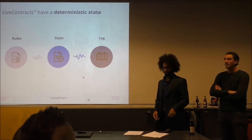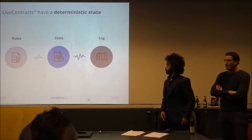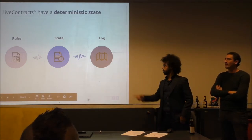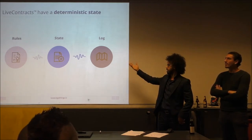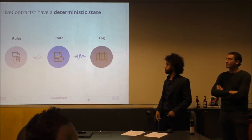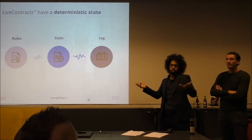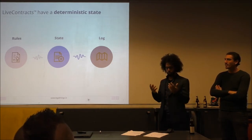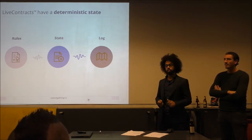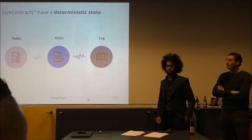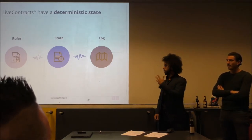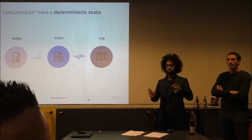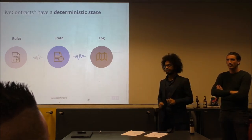What is that deterministic state? We have two things: we've got the rules, and then we've got a log. The log is everything that happens which has something to do with the contract. Both things are stateless — those are just facts that live on the chain. However, if we put those two together, we can determine the state. Let's take an example. There are some rules that say if you steal a sausage, you have to pay 180 euros.